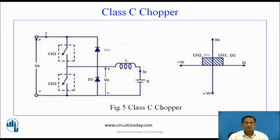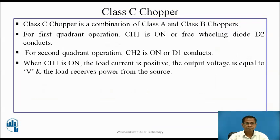Class C chopper — this is the circuit diagram of the Class C chopper. It is the combination of Class A and Class B choppers. Chopper switch 1 and D2 act as a Class A chopper, and chopper switch 2 and D1 act as a Class B chopper. For first quadrant operation, chopper switch 1 is on or the freewheeling diode D2 conducts. For second quadrant operation, chopper switch 2 is on or D1 conducts.